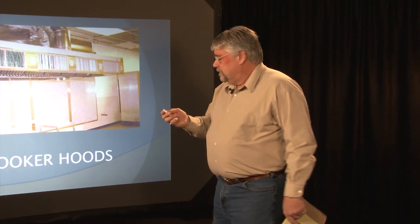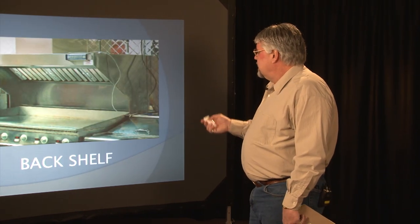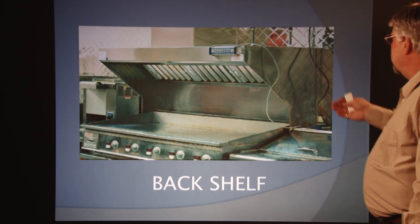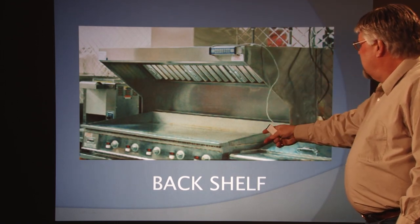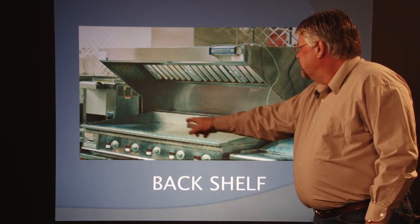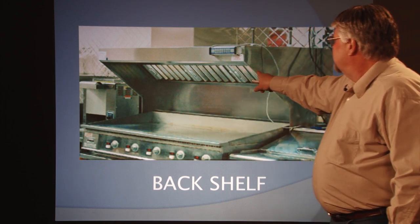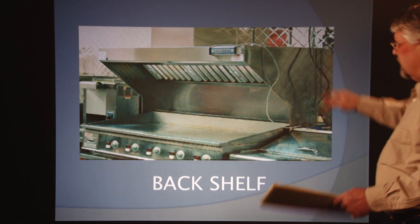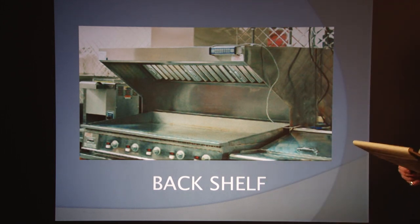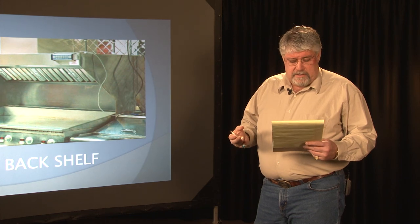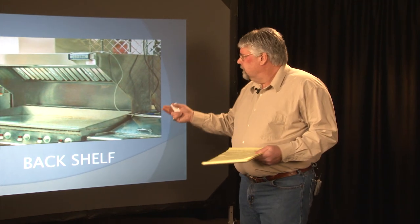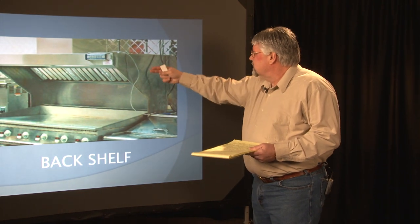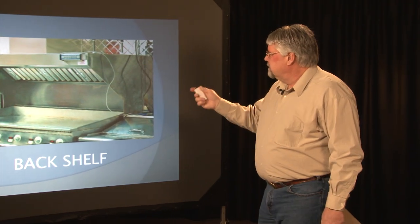Let's start with the back shelf. The back shelf hood is attached to the back of the appliance — this happens to be a grill — with filters that filter out. The back shelf hood is also referred to as a low proximity hood or a sidewall hood where it's wall mounted, and this one is mounted on the wall.